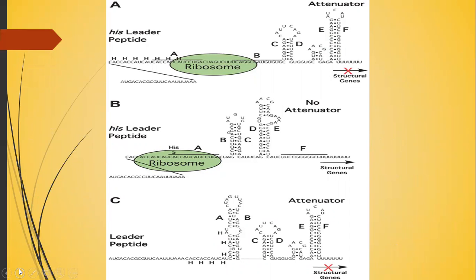As depicted in the figure, in part A: under conditions where histidine tRNA levels are high, ribosomal translation proceeds through the leader peptide to its stop codon, resulting in formation of the EF attenuator stem-loop and inhibition of further transcription into the histidine structural genes. In part B: under conditions of limited histidine tRNA, translation through the histidine codons is slowed, and the stalled ribosomes allow for formation of alternative RNA secondary structures that preclude attenuator formation, allowing RNA polymerase to continue transcription into the histidine operon structural genes.